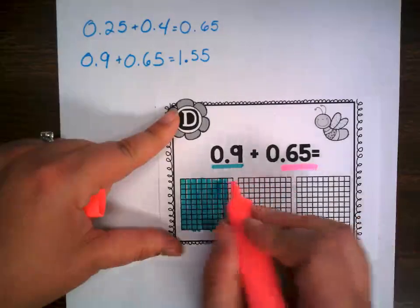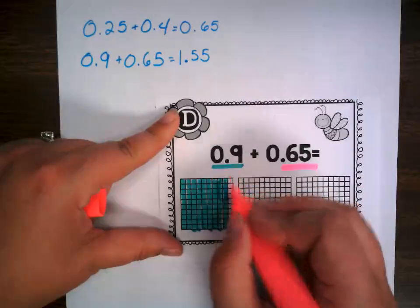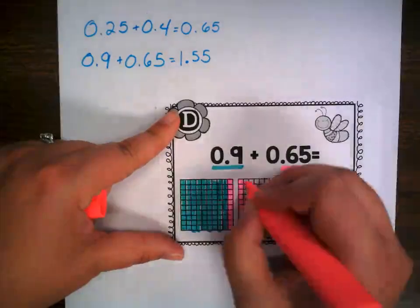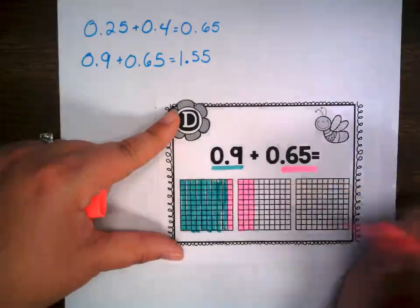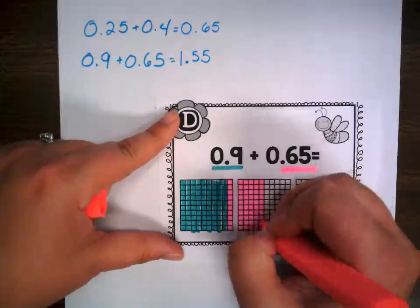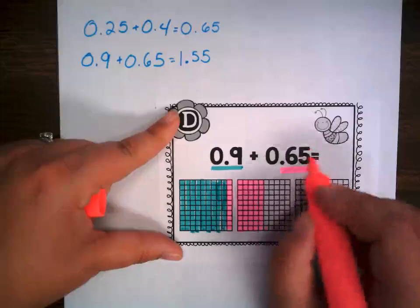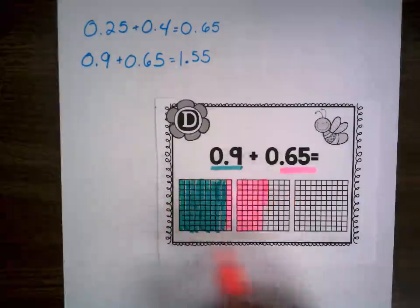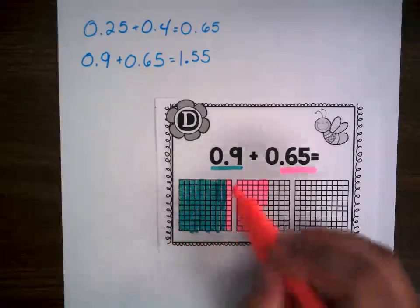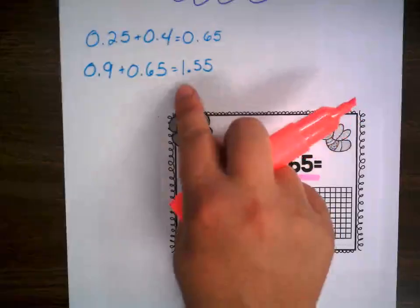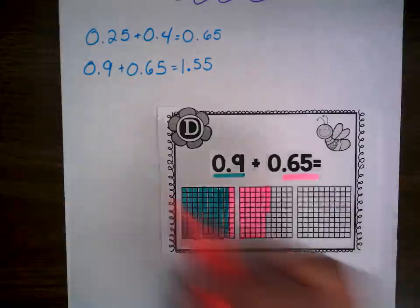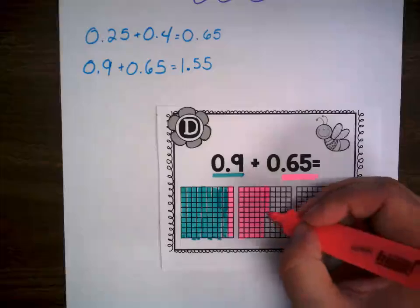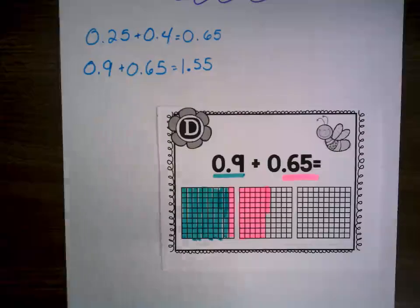I have my nine tenths and now I'm going to add 65 hundredths. I can just do a nice even line down in groups of ten — that's one tenth, two, three, four, five, six tenths filled in. And now I'll put my five hundredths: one, two, three, four, five. So now if I add all this together — I've got my whole box here filled in, which means I have one whole. Then I count five tenths remaining and five hundredths. I absolutely do have five hundredths.